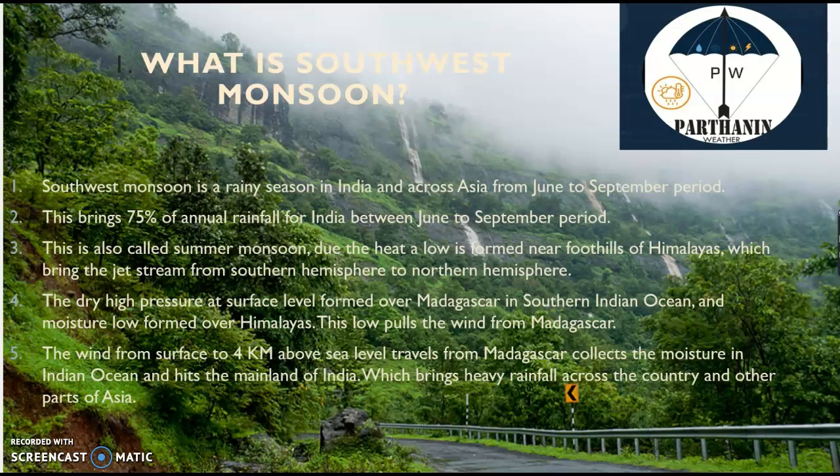The Himalayan heat low pulls the wind from Madagascar. During the monsoon season we observe from the surface to 4 km above sea level a wind pattern that travels from Madagascar, collects moisture in the Indian Ocean, and heats the mainland of India. This brings heavy rainfall across the country and other parts of Asia.